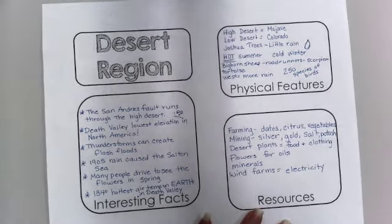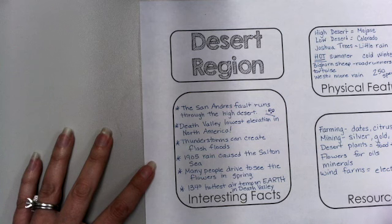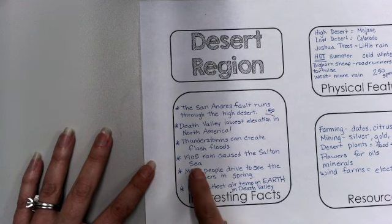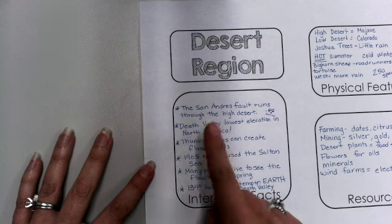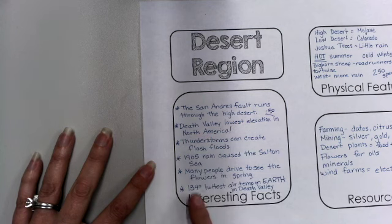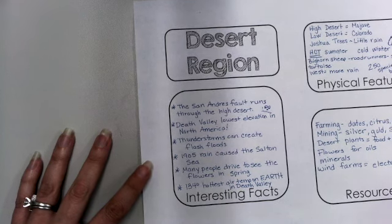I put my most interesting facts on this side, one of them being that in 1905 there was so much rain that it caused the Salton Sea. Also, Death Valley is known for two things: being the lowest elevation in North America, and having a record hot temperature of 134 degrees.